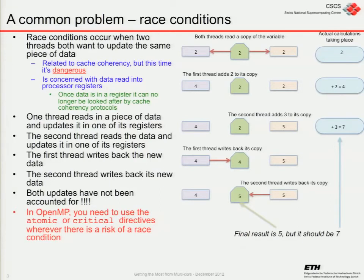To get around race conditions, you have to protect certain updates using atomic or critical directives if there's a risk of a race condition — that is, if you're updating a truly shared memory location as opposed to a shared array where each thread looks after a distinct section of memory. If you've got something like a particular location for a sum value, that's when you have problems with reduction operations and so on. But that's about bugs — what about performance? Because if you get poor performance, that's a bug too.